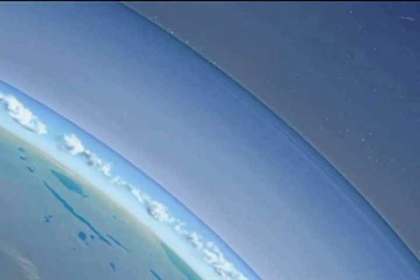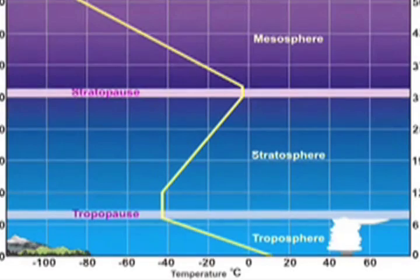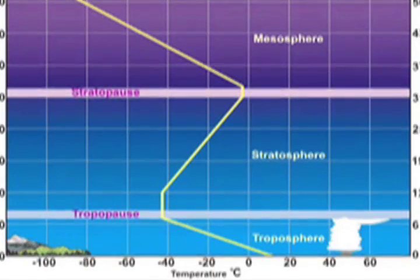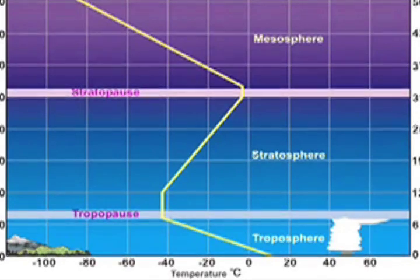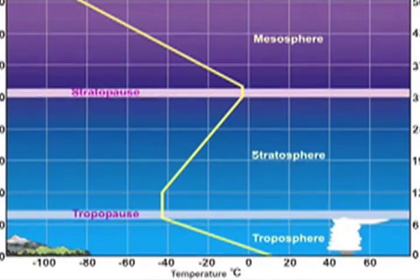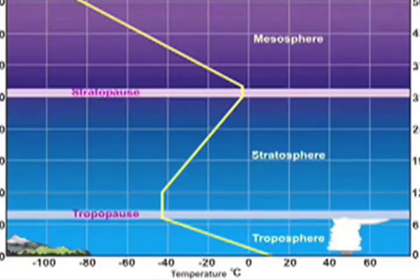In this layer, the temperature is typically decreasing with height. Once it reaches the tropopause, an inversion occurs. To measure the temperature and other elements of the vertical atmosphere, a radiosonde is used.